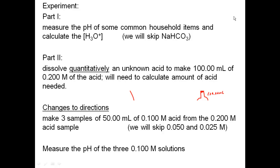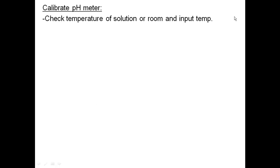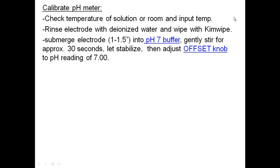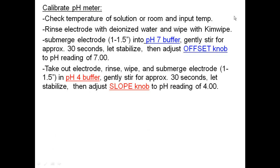And then we're going to do the run on those three solutions to get the pH and get the hydronium ion from that and get the Ka for each one of those. pH calibrating the pH meter first. You've got to check the temperature of the solution or the room and input that temperature into the machine. Next, you're going to rinse your electrode with DI water and then wipe with the Kimwipe. Those are the white tissues. Then you submerge your electrode about an inch or so into the pH buffer 7 first. Gently stir for about 30 seconds. Let it stabilize. Then adjust using the offset knob to read 7. So when we're in 7, we're using the offset knob to adjust to the 7.